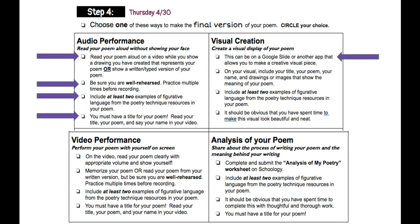Next, for the visual creation. This can go on a Google Slide or another app that allows you to show a creative visual piece. On your visual piece, include your title, your name, your drawing, and your image that shows the meaning of your poem. You must include at least two examples of figurative language. It should be obvious that you have spent time on this visual to look beautiful and neat.